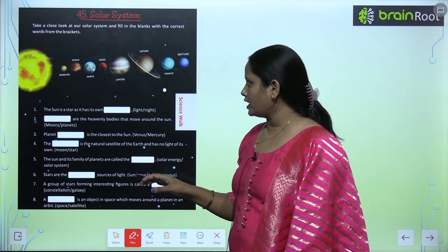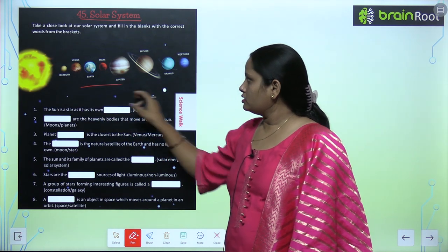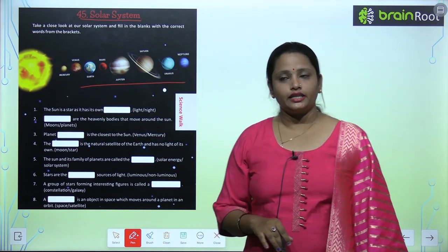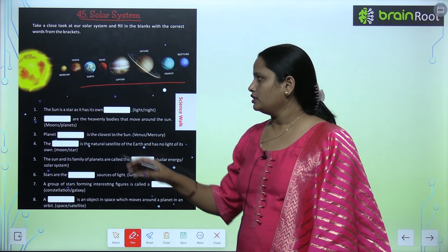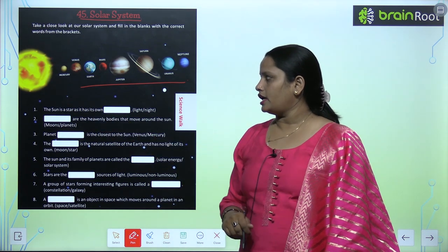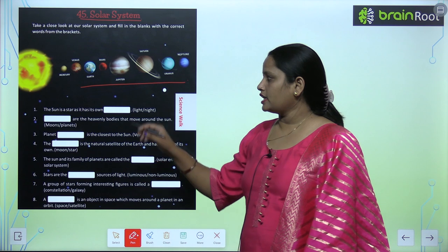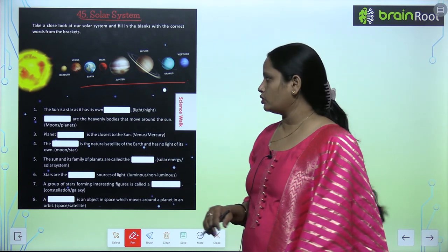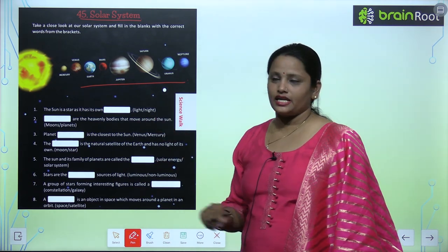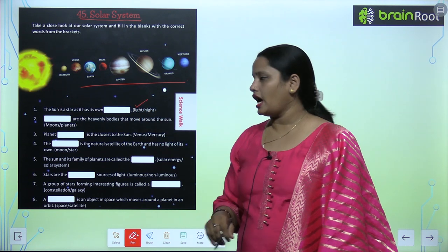So here in the bracket there are some words. We have to see solar system and then we have to fill here. The sun is a star as it has its own... Sun is a star, which is light or night? So it will be light.